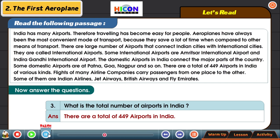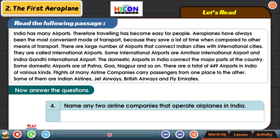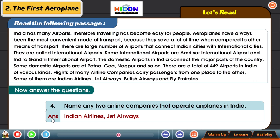Now the fourth question: name any two airline companies that operate airplanes in India. We have seen the names of some companies when we read the passage. Two airline companies that operate from India are Indian Airlines and Jet Airways.